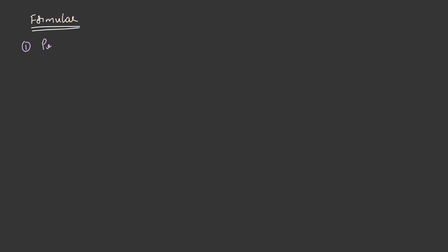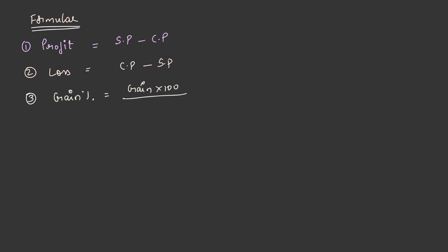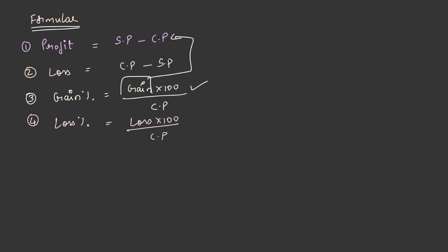Now let's understand the formulae. Profit or gain equals selling price minus cost price. Loss equals cost price minus selling price. The percentage of profit is gain multiplied by 100 divided by cost price, and the percentage of loss is loss multiplied by 100 divided by cost price. Both profit and loss percentages are mainly dependent on cost price.